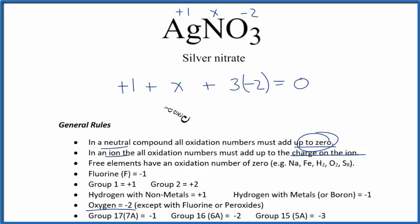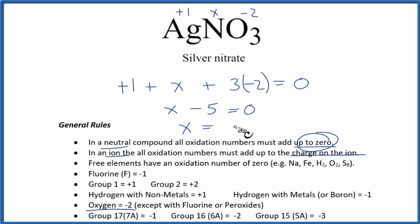Now solving: X minus six plus one equals zero, so X minus five equals zero, and X equals positive five. That is the oxidation number on the nitrogen. We'll write positive five here, and those are the oxidation numbers for AgNO₃, silver nitrate.